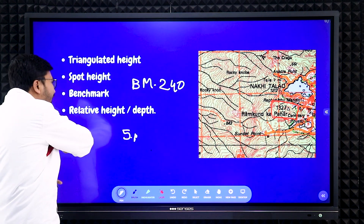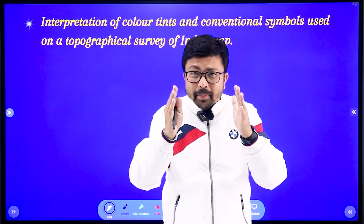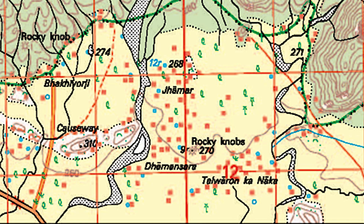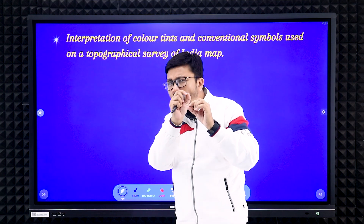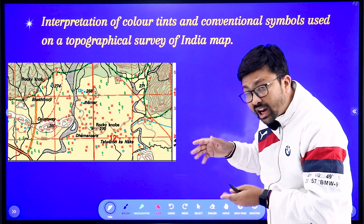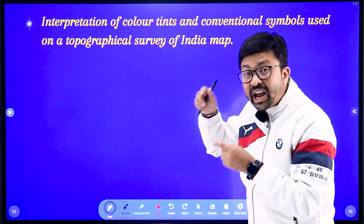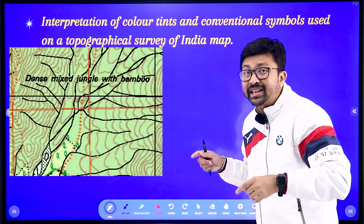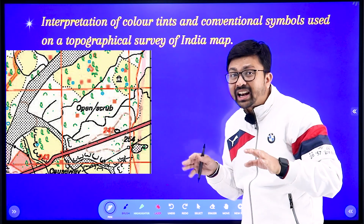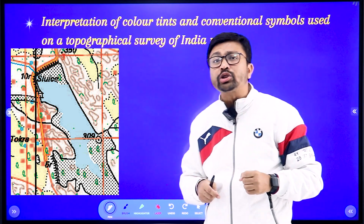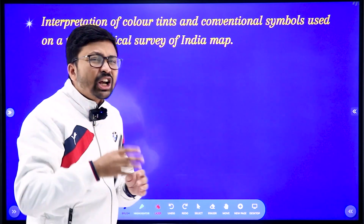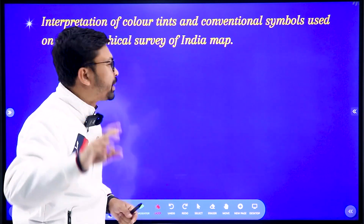You also need to understand the topographical map through its colors. Yellow color indicates agricultural fields. Green patches indicate forest area. White patches mean barren land. Blue color indicates water bodies. Just remember these important colors — if you know them, that will serve the purpose.